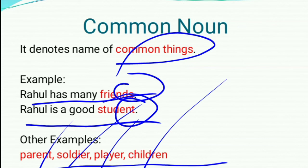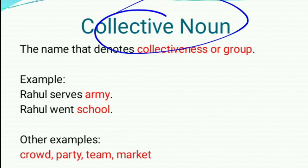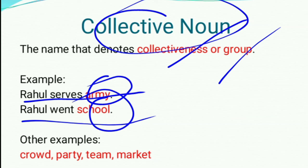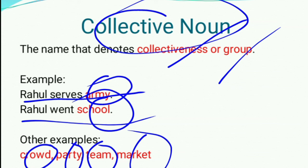Now, collective noun — the name that denotes collectiveness or a group. For example, Rahul serves army — here the word in red, army, is a collective noun. Another example: Rahul went to school. Other examples: crowd, party, team or market — they are examples of collective noun.